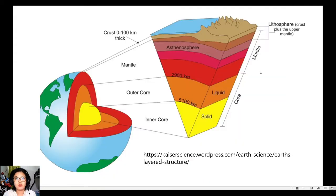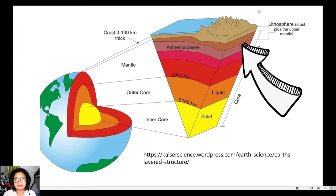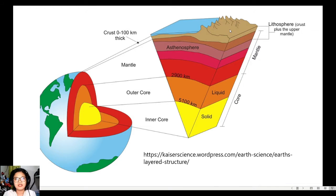The lithosphere is composed of the crust and the upper mantle. The lithosphere rides above the asthenosphere, which is a plastic layer of the Earth. This layer is still part of the mantle, which is found above the Earth's core.